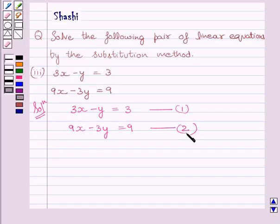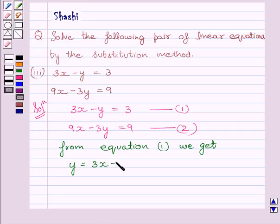Now from equation 1 we get y is equal to 3x minus 3. We name this equation as 3.